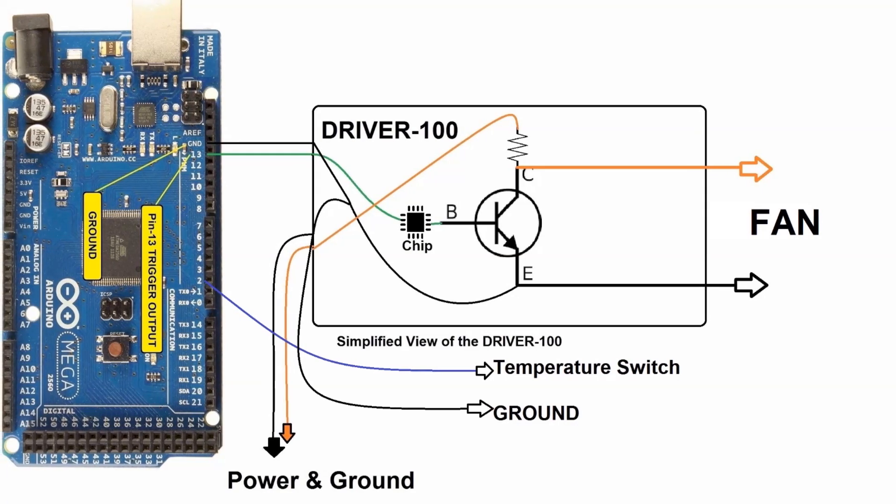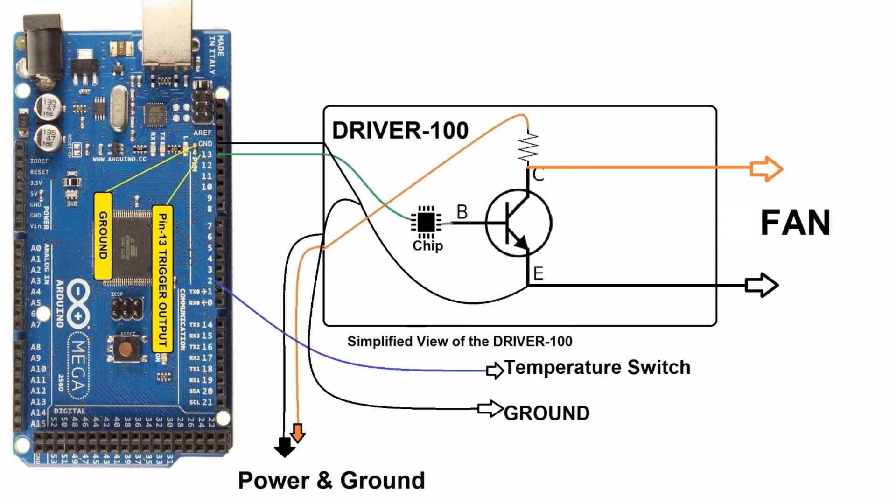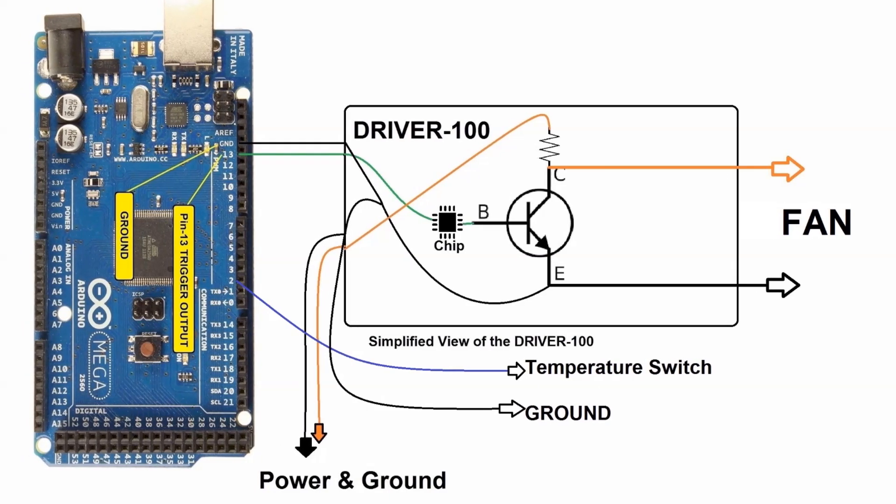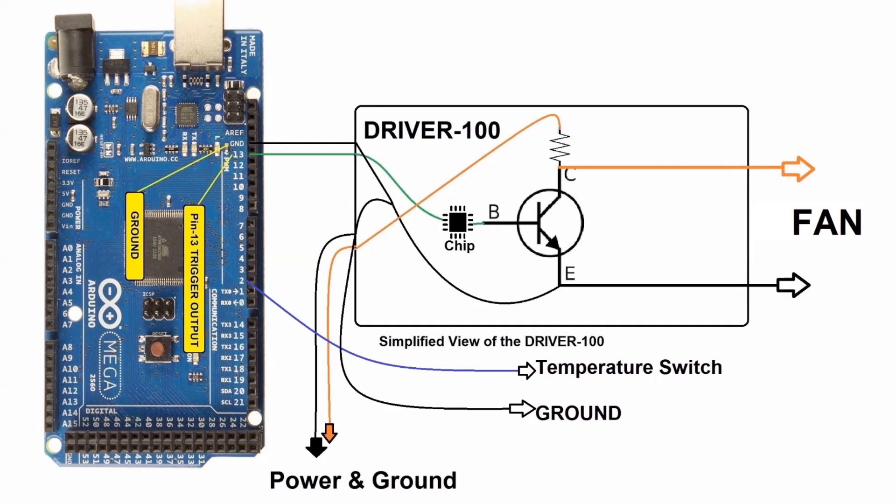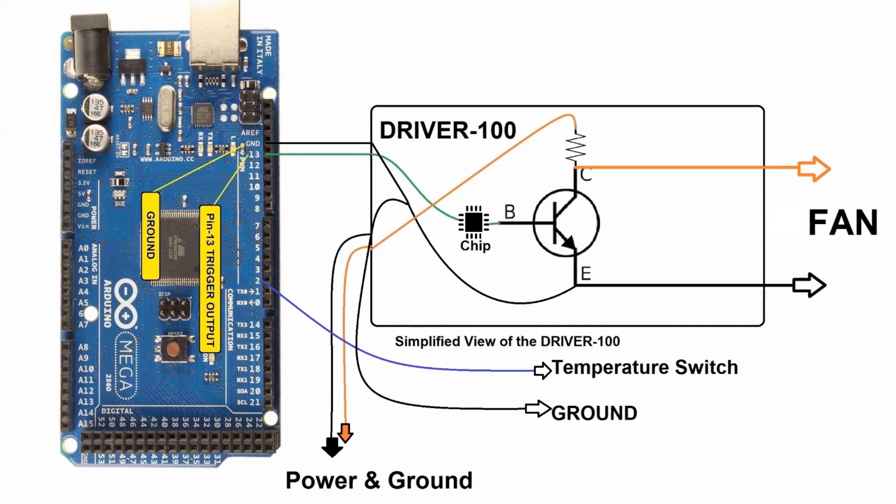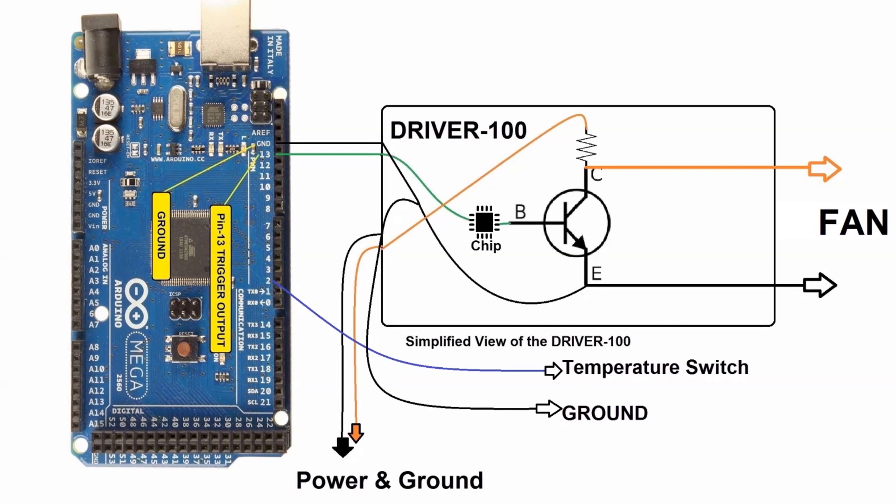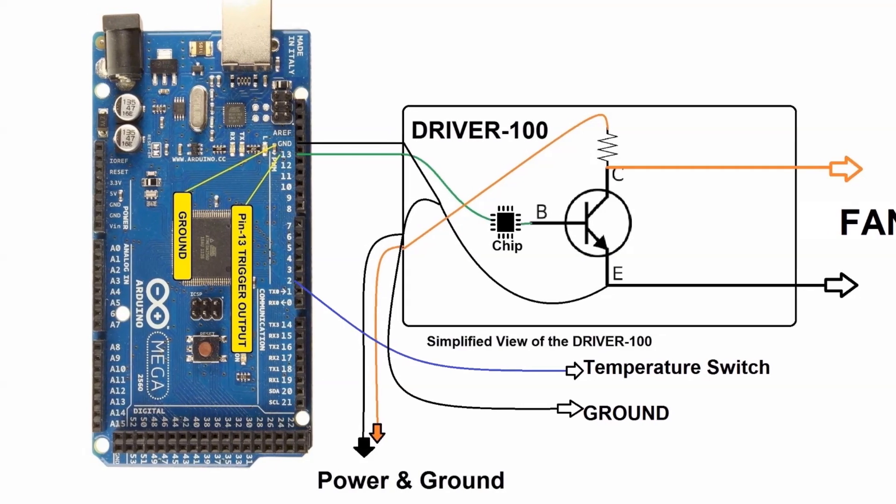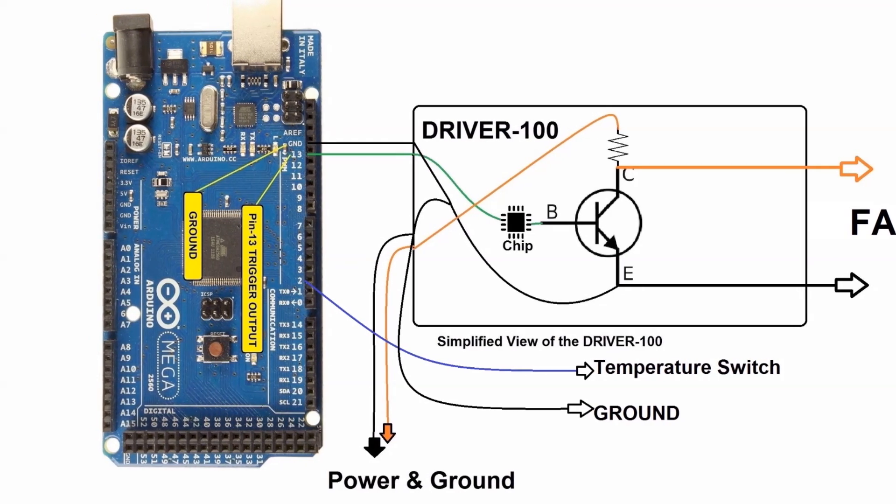They're connected exactly as you can see here. One leg, one terminal, one pin is connected to ground, and the other one is connected to the input of whatever module it is. In this particular case, we're using an Arduino board, but if it's an automotive module, it'll be connected to whichever module it's connected to.